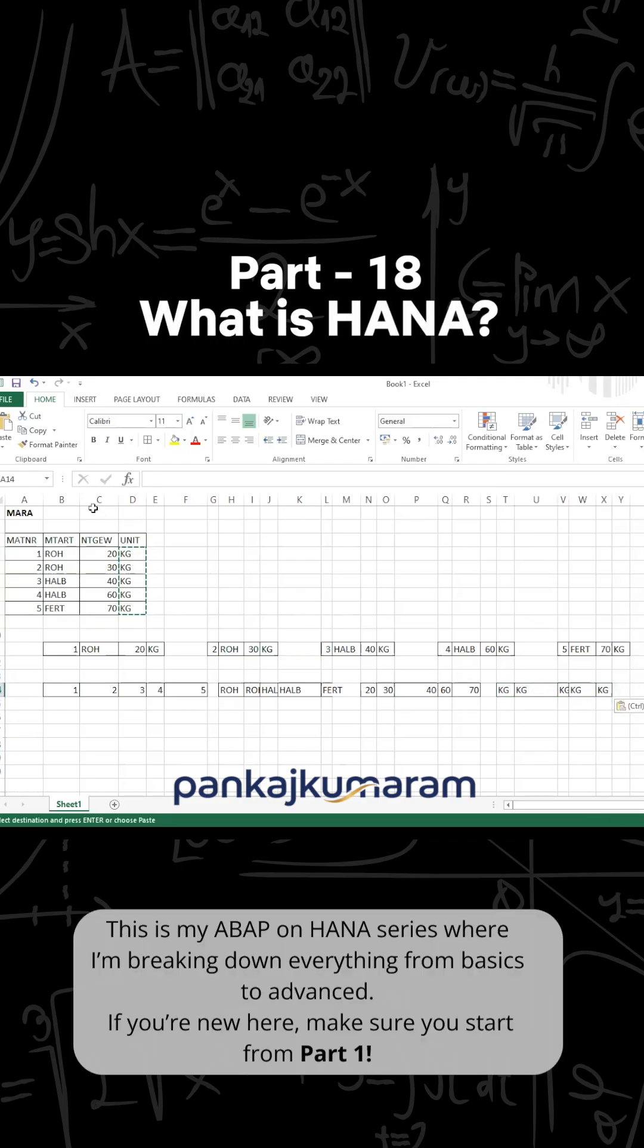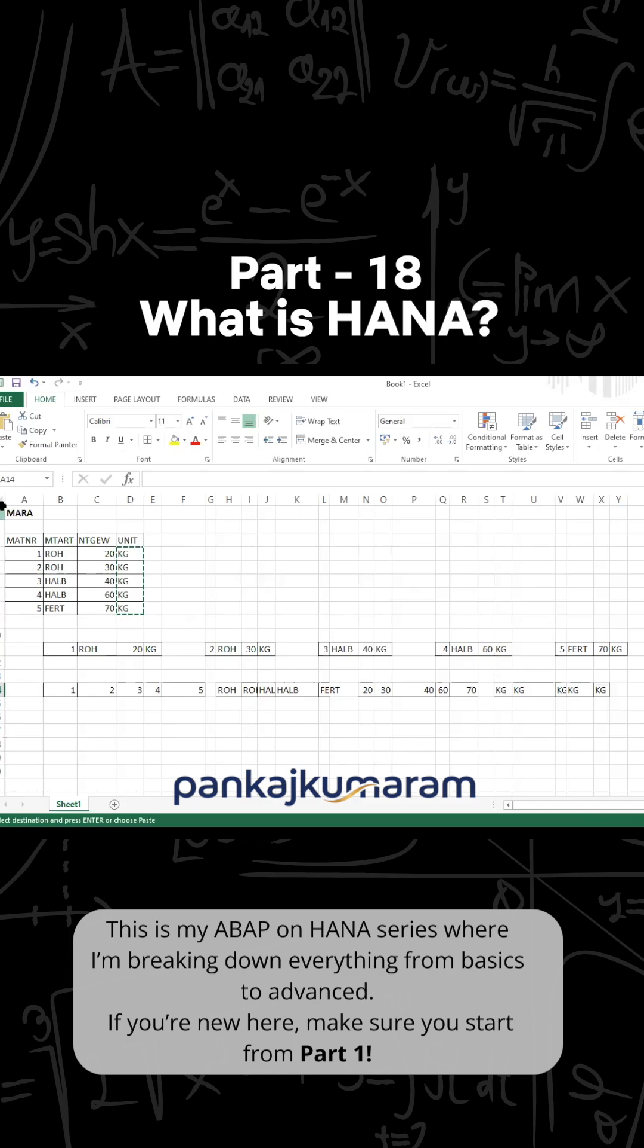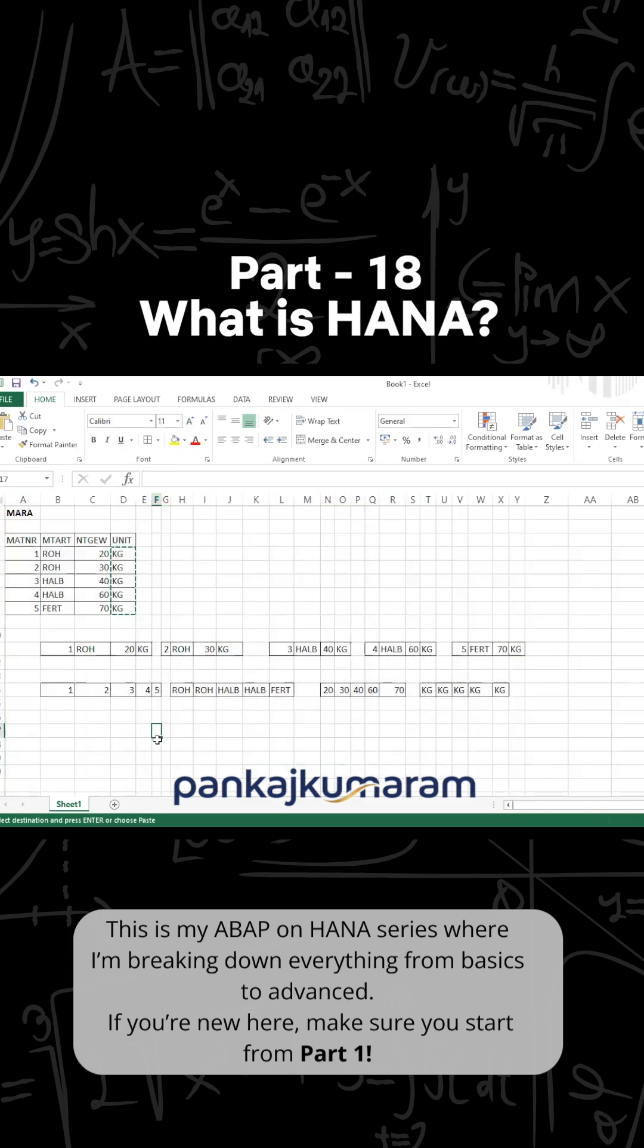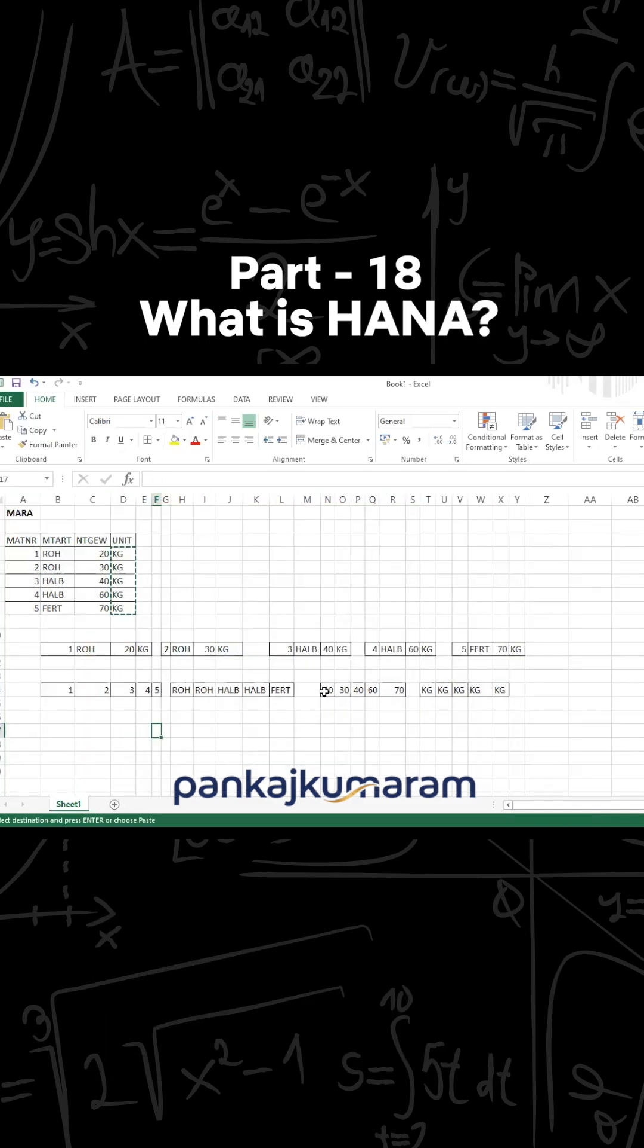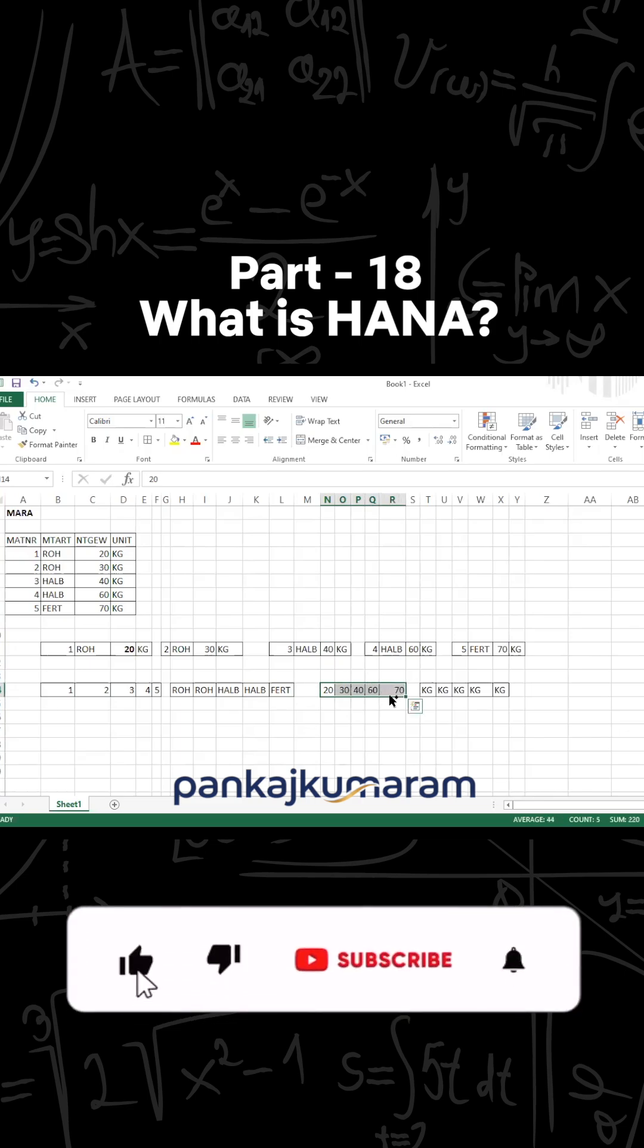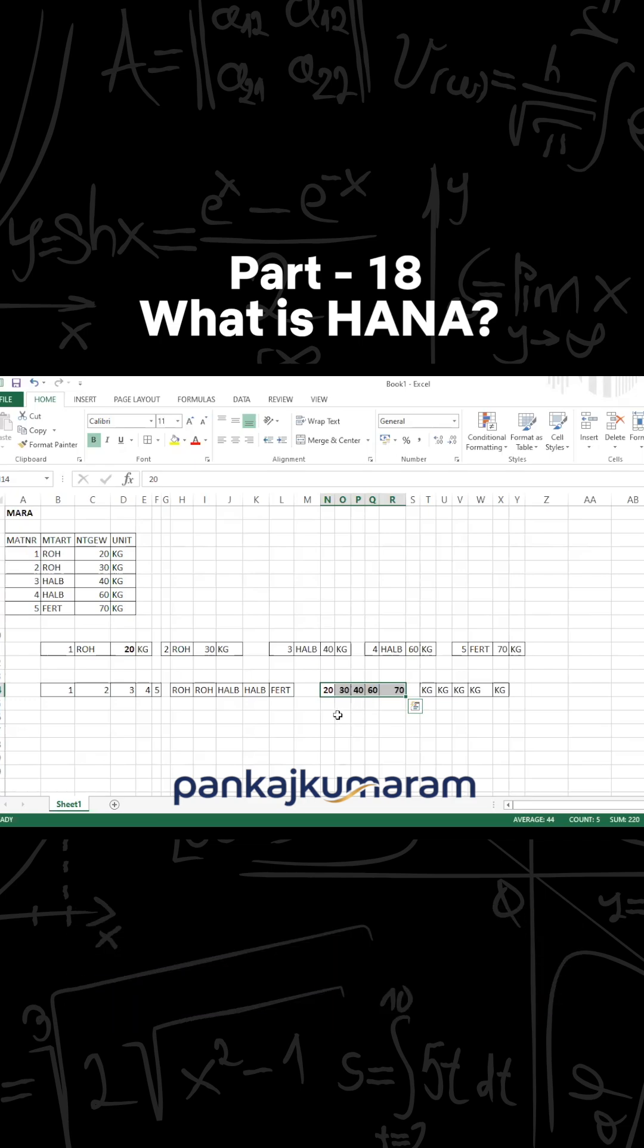Now you can see when it has to add this particular quantity field, it just has to traverse from 20, 30, 40, 60, and 70. But here you can see that 20, 30, 40, 60, 70 all are together over here. So this is one benefit of column storage: when you have to perform aggregation on some quantity or currency field, it's very fast.